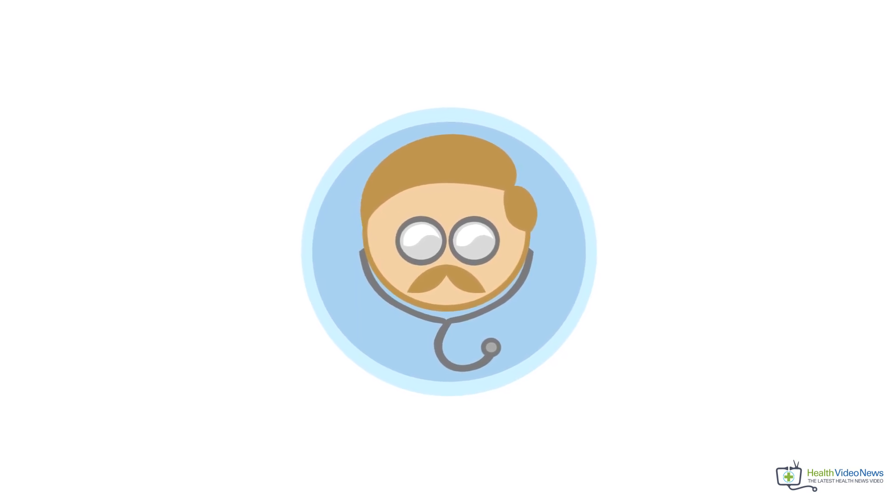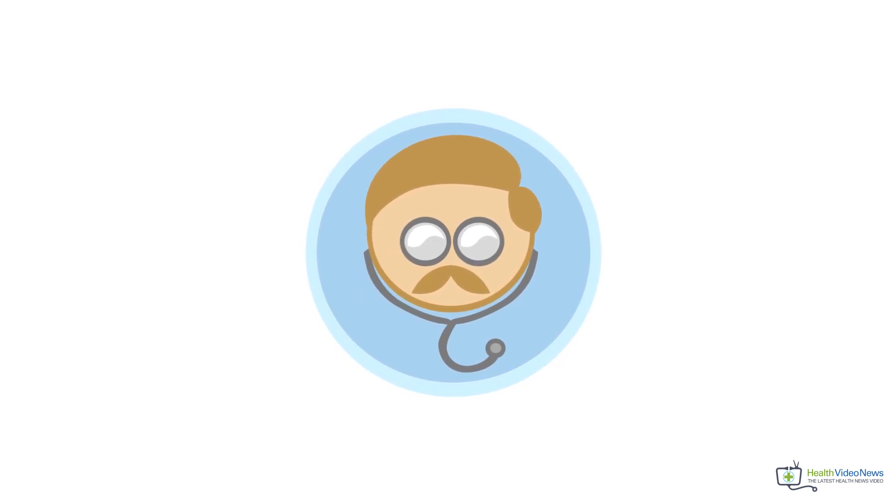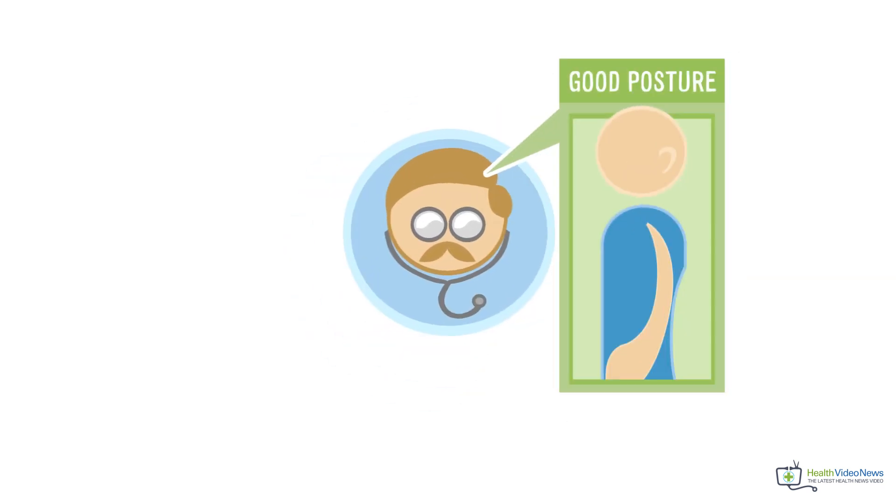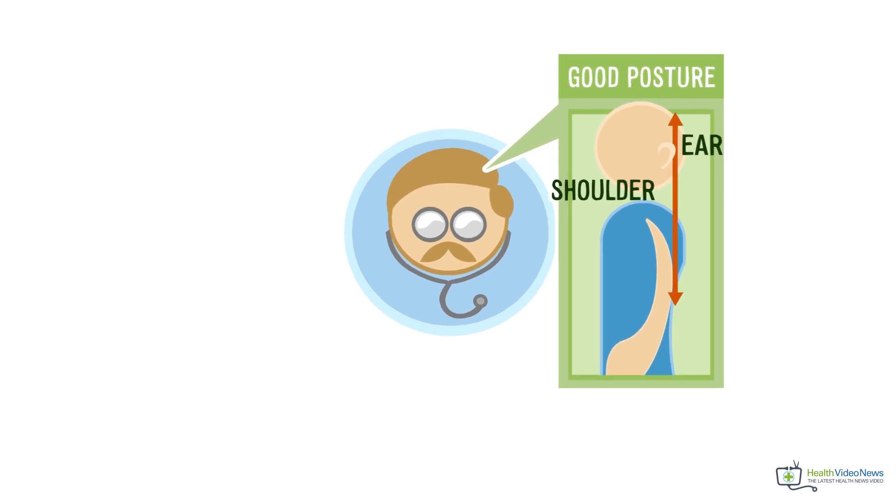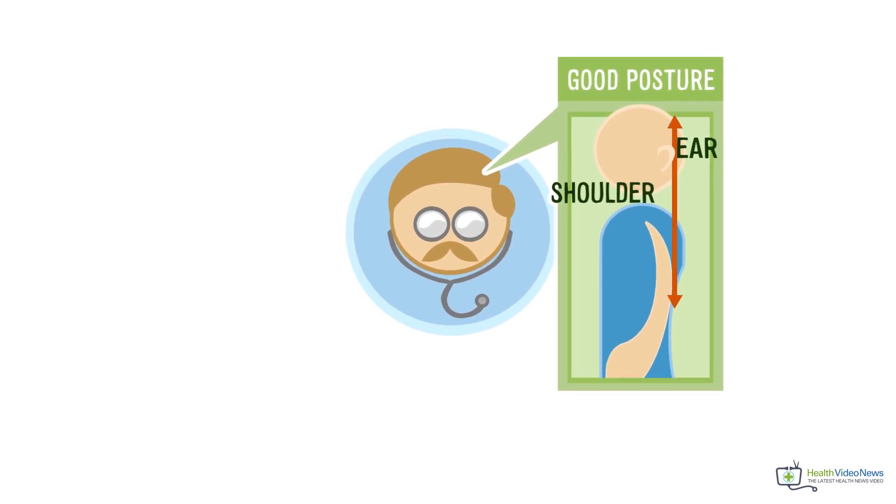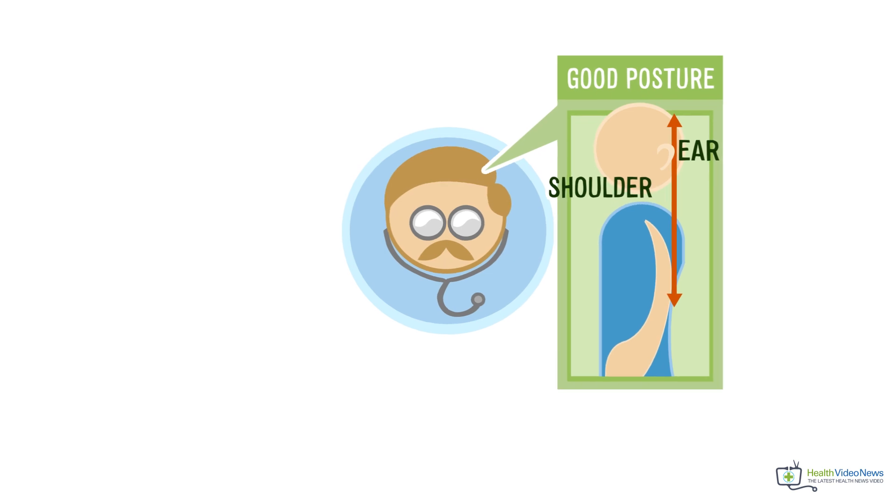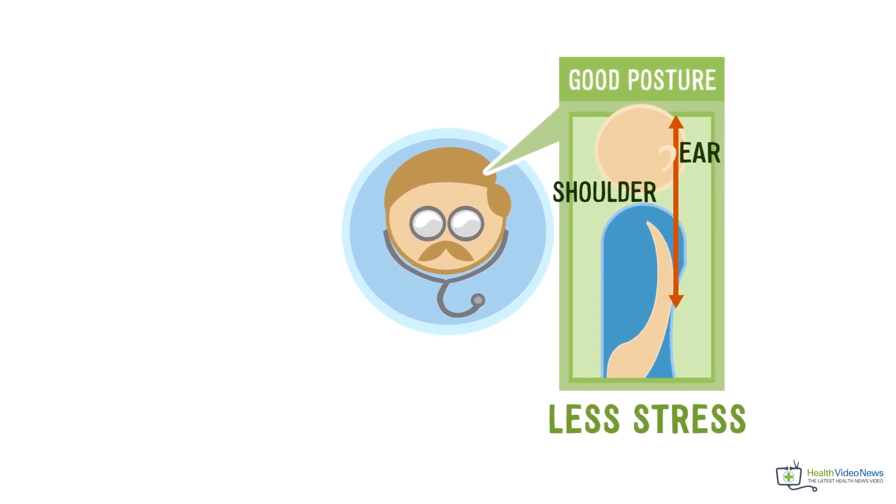Physiatrists, the medical experts who specialize in physical medicine and rehabilitation, define good posture as ears being aligned with the shoulders with the shoulder blades retracted. Proper alignment of the ears with the shoulders ensures less stress on the spine.